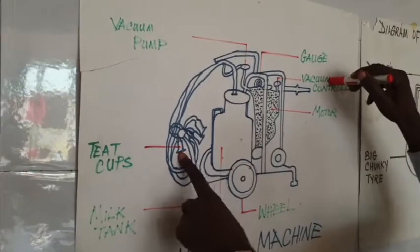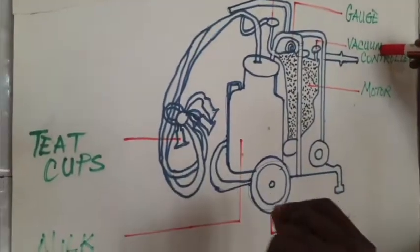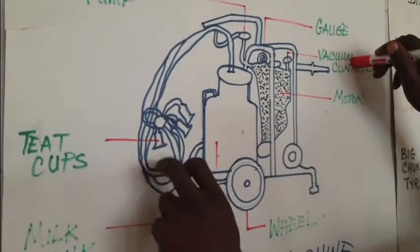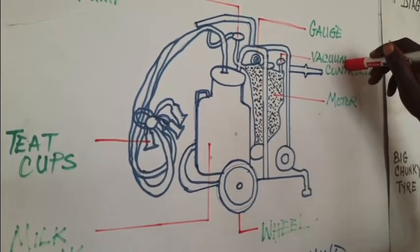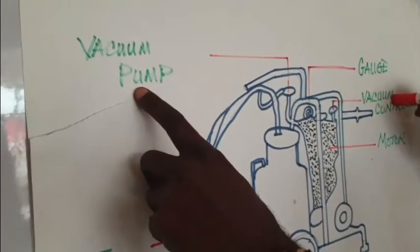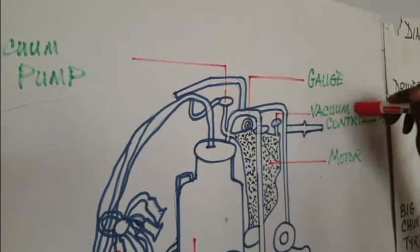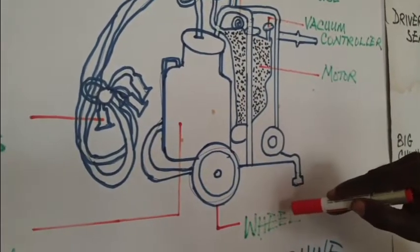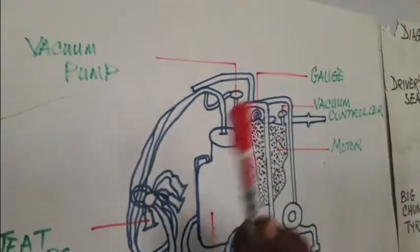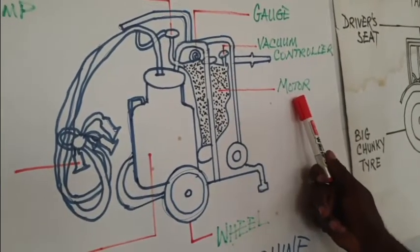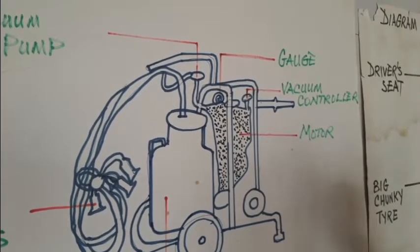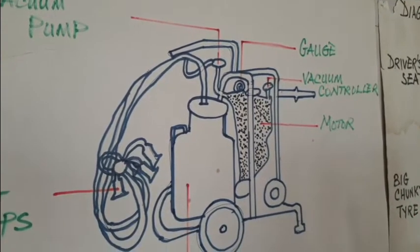The teat cups are the devices that are attached to the teat — that is, the tip of the udder of the animal. This vacuum controller controls the pressure with which the teat cups draw milk from the udder. This is the milk tank where the milk collected by the milking machine is stored temporarily. This is the vacuum pump that increases the pressure in the vacuum controller. These are the wheels, which make it possible for the milking machine to be moved from one place to another. So you have the vacuum pump, teat cups, milk tank, wheel, motor, vacuum controller, and gauge. You must be able to remember at least five of these parts in an examination.